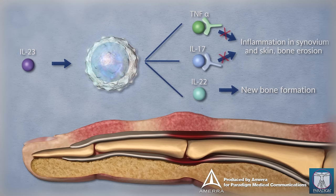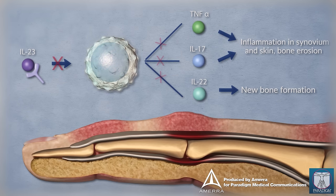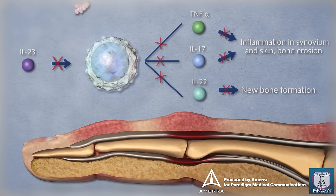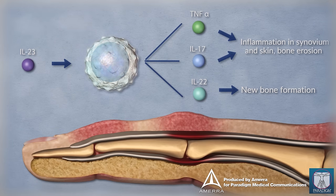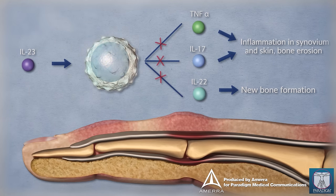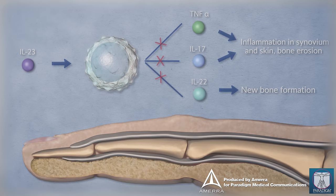Monoclonal antibodies block and inhibit their target molecules' function. Small molecule inhibitors work within a cell to shut down inflammatory cytokine production, and presumably target the associated clinical manifestations of psoriatic arthritis.